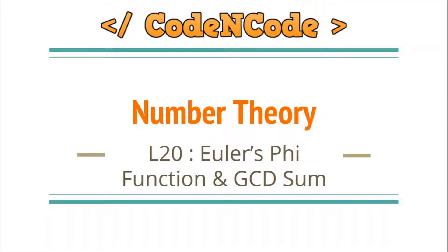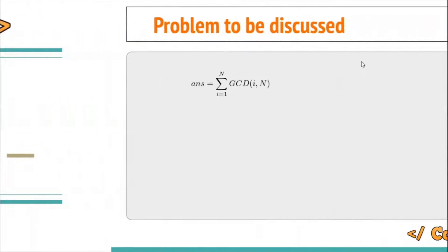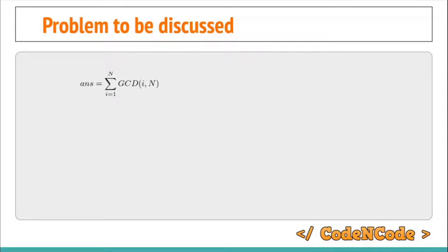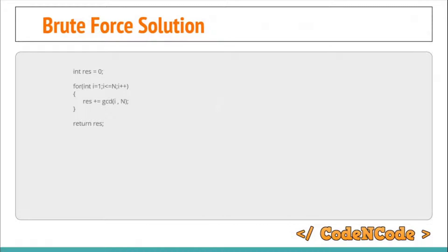Hello guys, this is Code and Code, and this is the 20th lecture of this number theory series. In this lecture, we are going to see some relationships and how we can evaluate the expression: answer equals the summation of GCD(i, n) for i running from 1 to n. For example, if n equals 5, the answer is GCD(1,5) + GCD(2,5) + GCD(3,5) + GCD(4,5) + GCD(5,5).